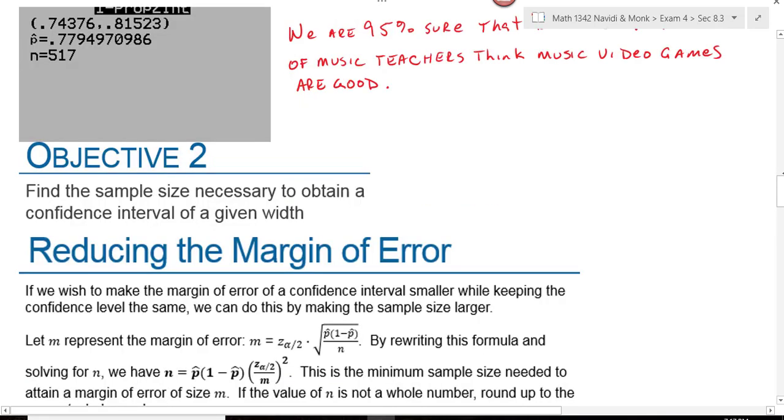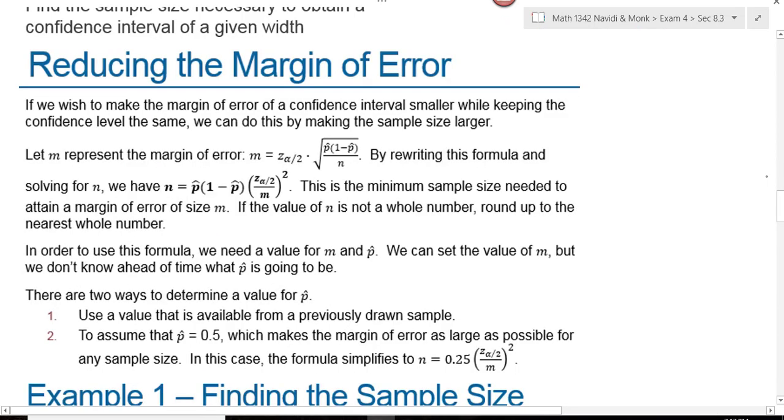The next objective is to find the sample size necessary to obtain a confidence interval of a given width. We go through the same process that we did for the means. We take our margin of error formula, which is your critical value times your standard error from the central limit theorem, and we solve it for n. When we do that, we end up with this equation right here.